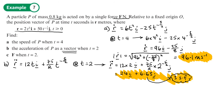Part C: find F when t = 2. This uses F = ma. We know the acceleration vector from Part B, and we need to multiply it by the mass, which is 0.8. We can leave the answer as a vector.